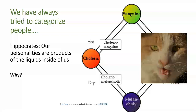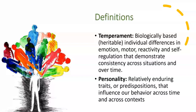Specifically, psychologists study temperament and personality as a way to understand inter-individual differences and to understand the components — like genetics or the environment — that make us who we are. When we talk about temperament, we are referring to biologically based individual differences in emotion, motor reactivity, and self-regulation that demonstrate consistency across situations over time. On the other hand, personality refers to the relatively enduring traits or predispositions that influence our behavior across time and across context. Temperament places much more emphasis on characteristics being biological, because there are clear distinctions in how babies react to novel stimuli, their activity level, and their sociability from very early on — before they have had very much experience or environmental influences.